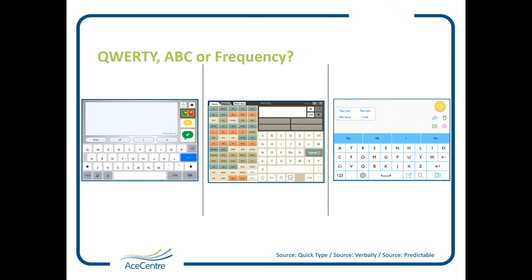The keyboard can also be arranged in ABC, so alphabetical order. This is helpful for some people, and you might find that you can start to locate letters really easily. However, some people who are more used to typing with QWERTY can find it actually takes a bit of time to find the particular letters they want when they're in ABC.